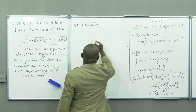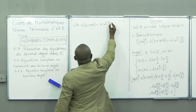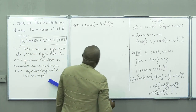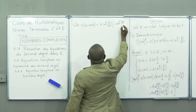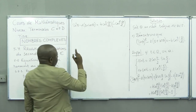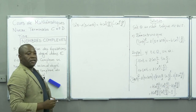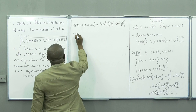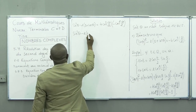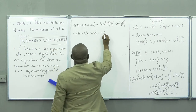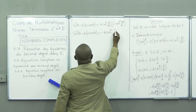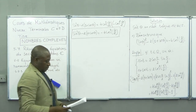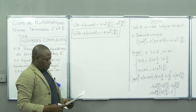On a 4cos²(θ/2) en facteur, multiplié par -cos²(θ/2), ce qui donne -4cos⁴(θ/2). Finalement, sin²θ - 2(1 + cosθ) = -4cos⁴(θ/2). Nous avons notre résultat. Ce résultat n'est pas demandé par hasard, car il va nous servir dans la suite.